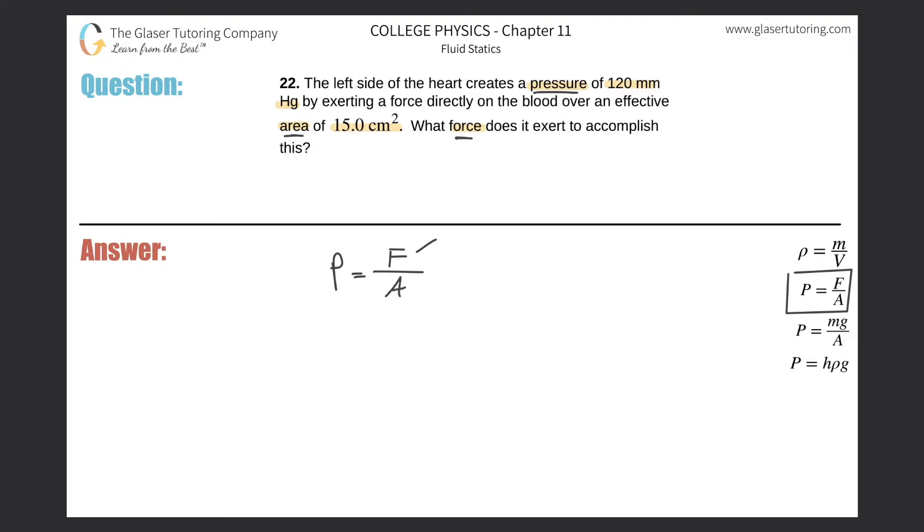So we want to find force, so easily just algebraically rework this equation. We just do a quick cross multiplication here. So force will be equal to the pressure multiplied by the area. Now, what we have to remember are the appropriate units for pressure and for area. For pressure, we want it in Pascal, aka newtons per square meter. And we also want that area to be in meters squared as well. So those are the two issues here in the problem. They give us the pressure, but the pressure is 120 millimeters of mercury.